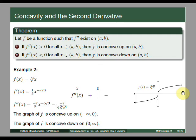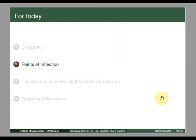On the next part of this lesson, we look at those special points — like at x equals 0 — where from the left and from the right the concavity changes. We will call these points of inflection. See you in the next video.